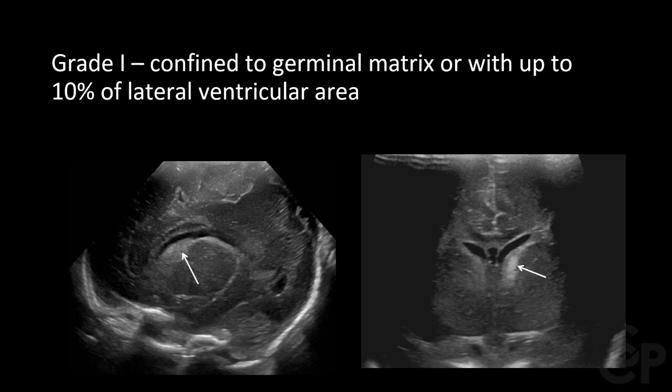Grade 1 is confined to the germinal matrix or with up to 10% of the lateral ventricular area. The sagittal view shown on the left confirms the hemorrhage is confined to the germinal matrix. The coronal view on the right indicates this is one-sided, making it grade 1 and asymmetrical.